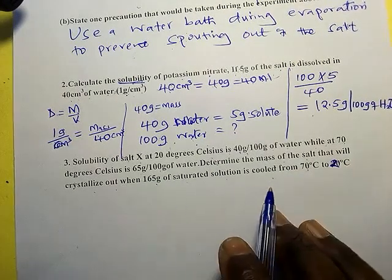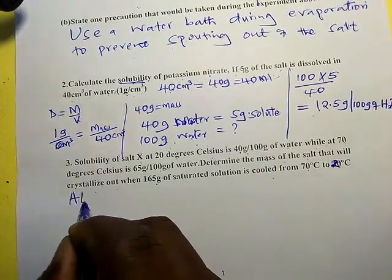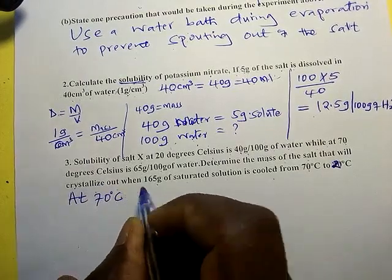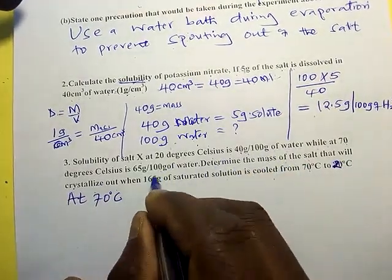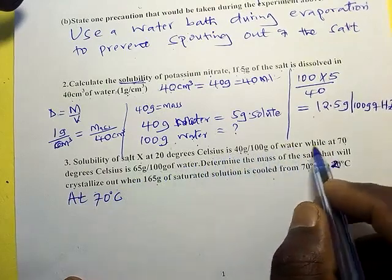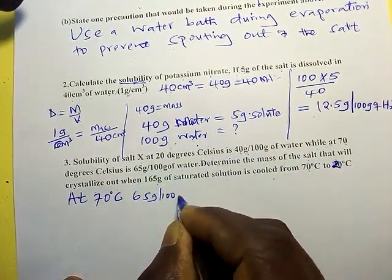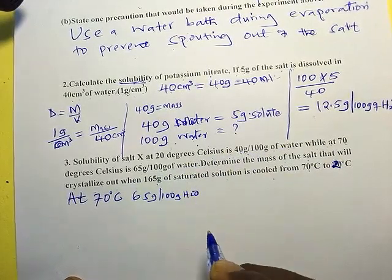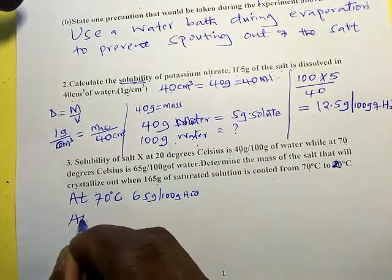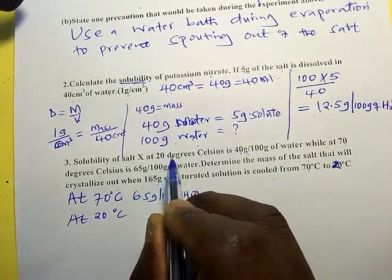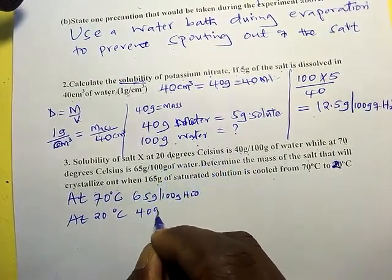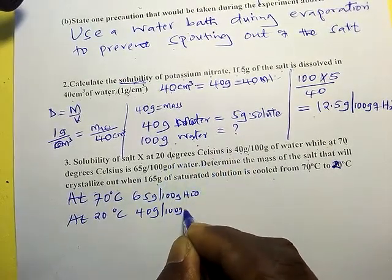So we must understand at what temperature. At 70 degrees Celsius, what is the solubility? At 70 it is 65 grams in 100 grams of water. At 20 degrees Celsius, it is 40 grams per 100 grams of water.